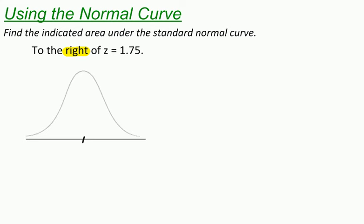Zero is always the z-score in the center of a normal distribution. A z-score of 1.75 is going to be somewhere in this area. So here's my z-score of 1.75, and I want to find the area to the right. So this green shaded region is the area that I'm trying to find.